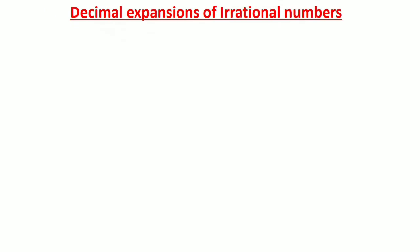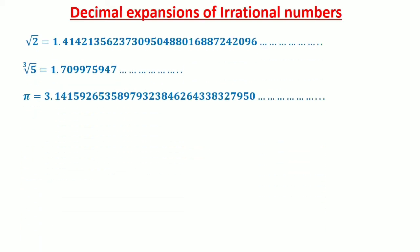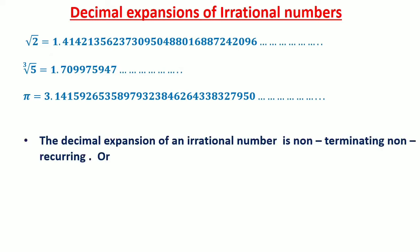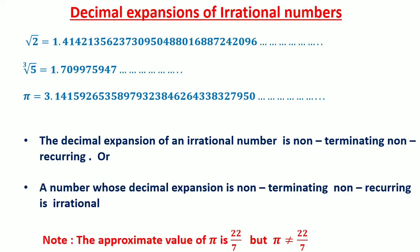Now we are going to discuss the decimal expansion of irrational numbers. We observe that the decimal expansions of irrational numbers — such as √2, ∛5, and π — are never-ending and never repeat. Hence they cannot be expressed in the form p upon q. Thus the decimal expansion of an irrational number is non-terminating non-recurring, and conversely, a number whose decimal expansion is non-terminating non-recurring is irrational. Remember: the approximate value of π is 22 upon 7, but π is not exactly equal to 22 upon 7 — 22 upon 7 is a rational number.